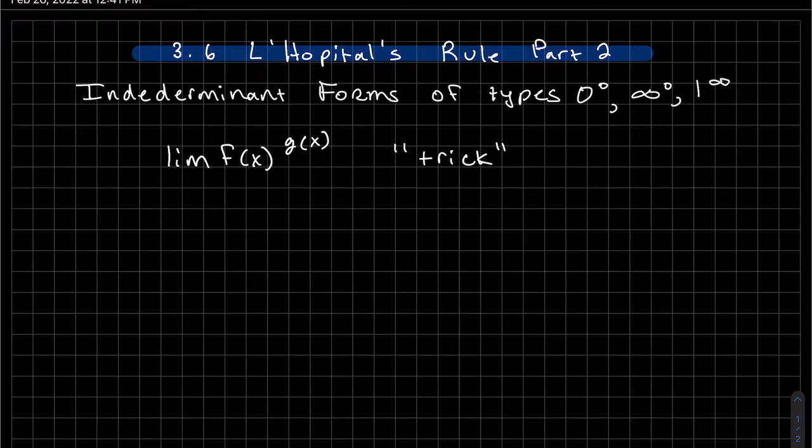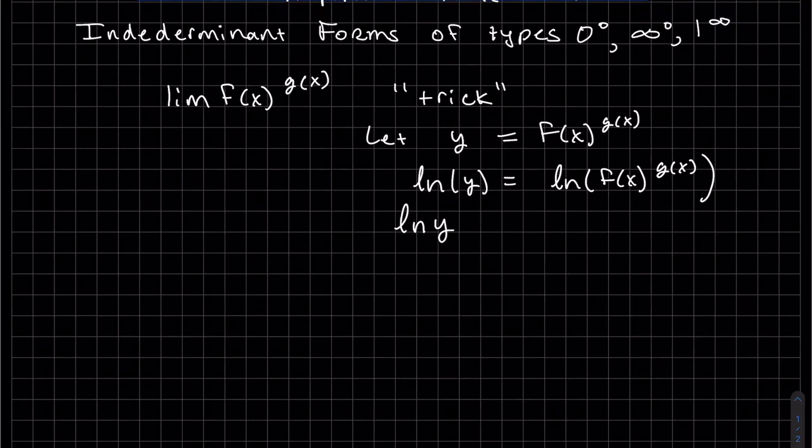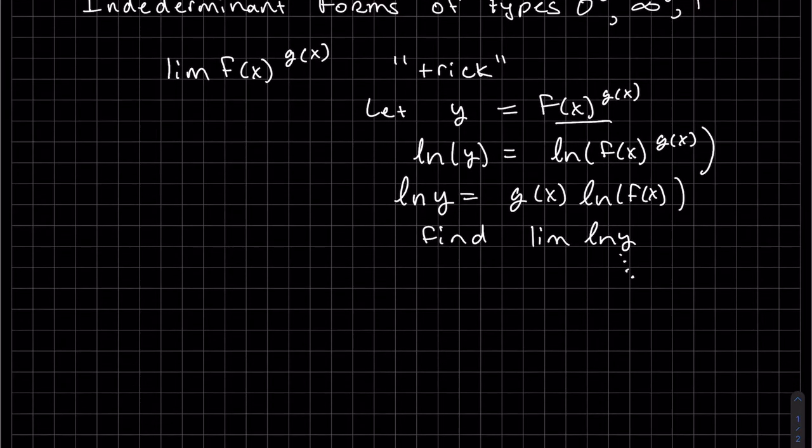What we're going to do is let y equal to that function raised to a function, and then take natural log of both sides. Natural log of y, we use the power rule, bring that power down, and then we will be finding the limit of natural log of y. At the end, we'll have to compensate to get it back to just y. Let's do an example.